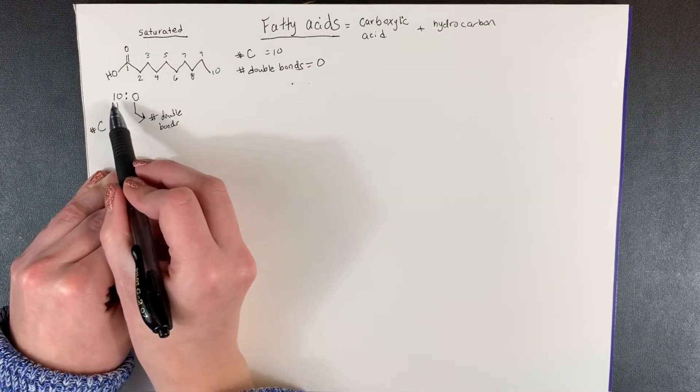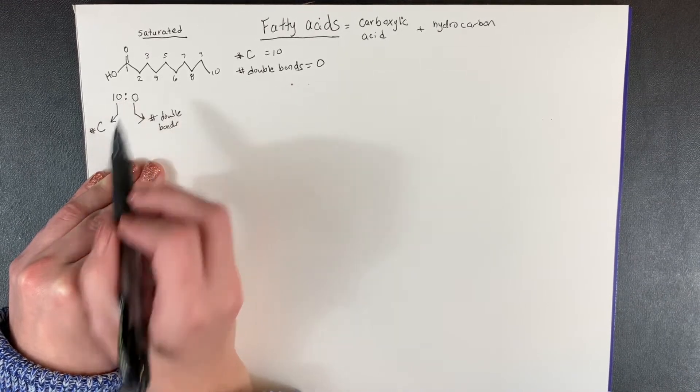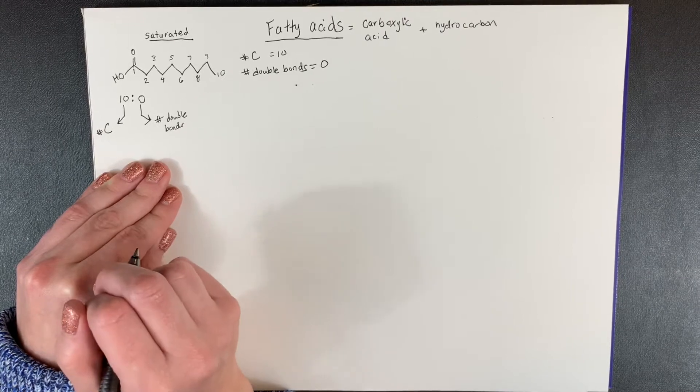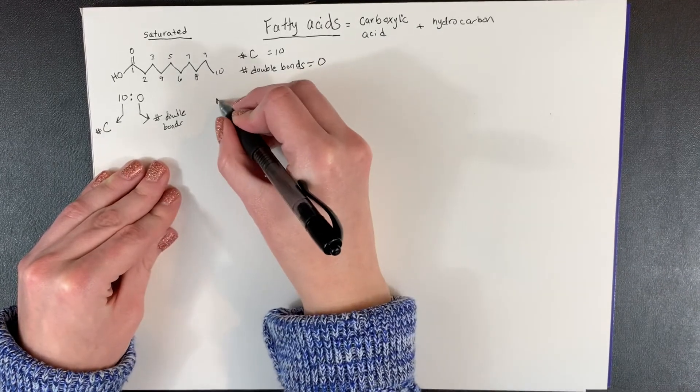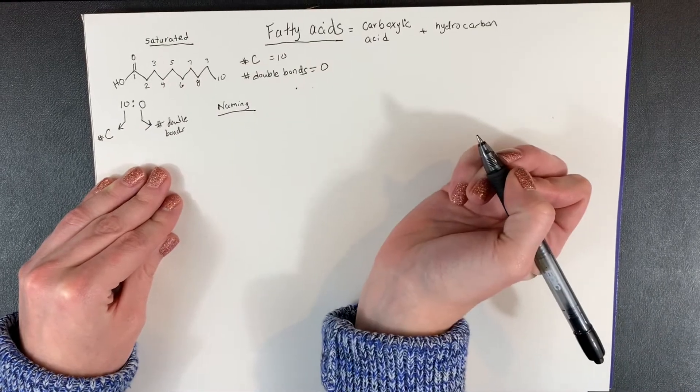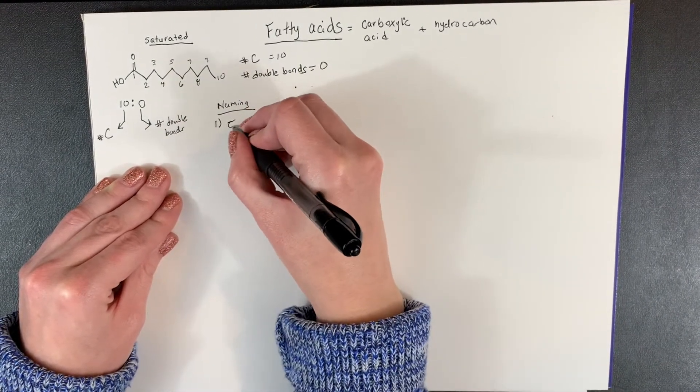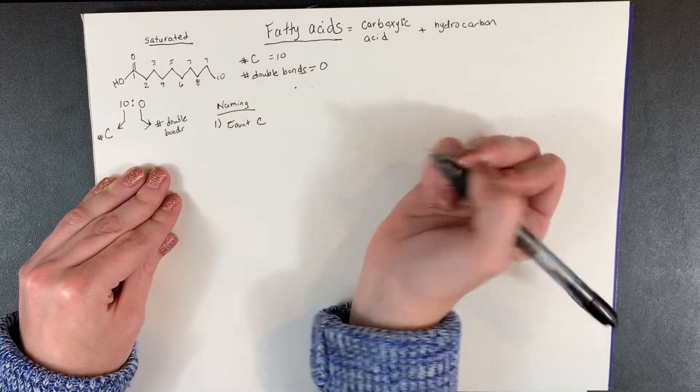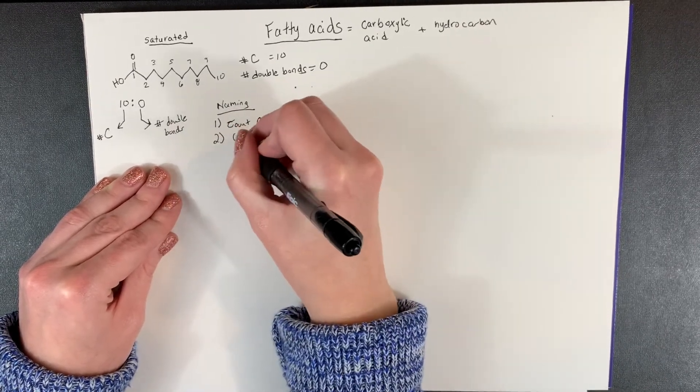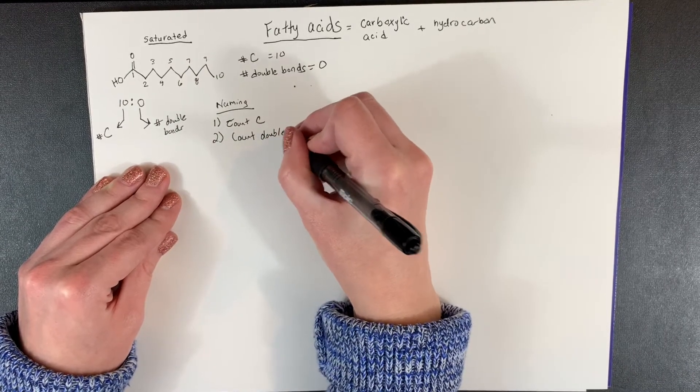So one way to describe fatty acids is using these two numbers with a colon. Now if we get on to naming this fatty acid, there's basically two steps and we've done most of the work already. Step one is count the carbons. Step two, count the number of double bonds. So we know this already.